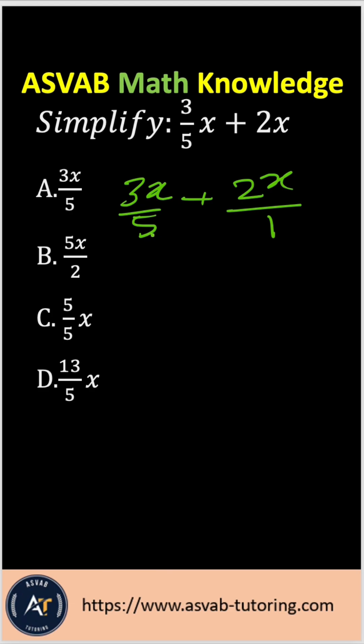To add a fraction, you have to find the common denominator. So let's do that. In this case, the common denominator is 5, so multiply the second fraction by 5 over 5.